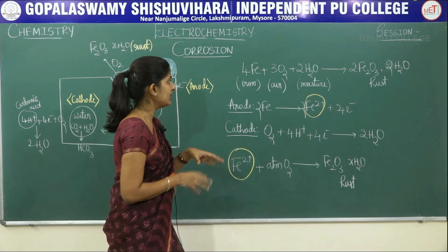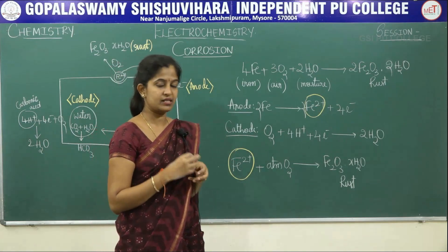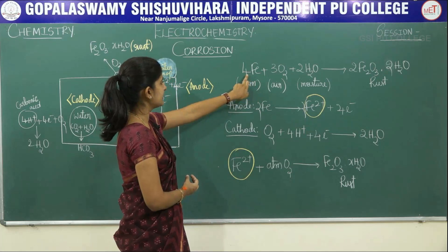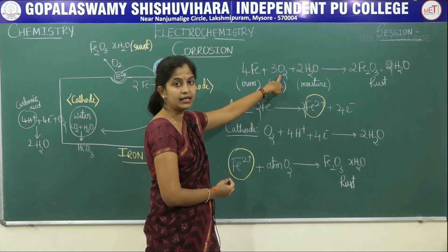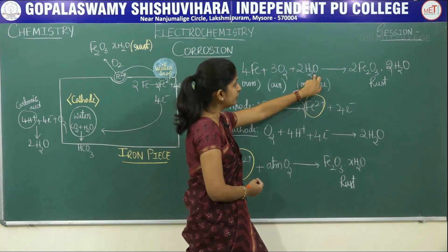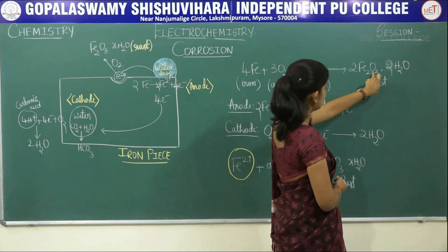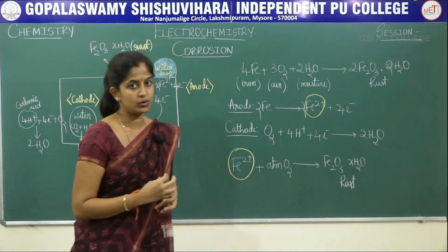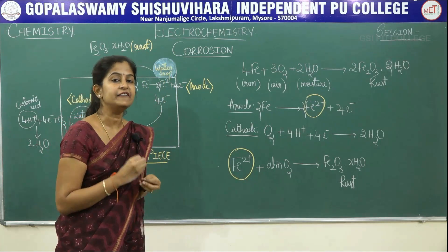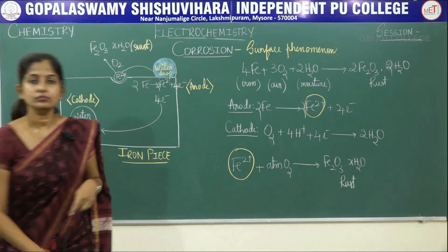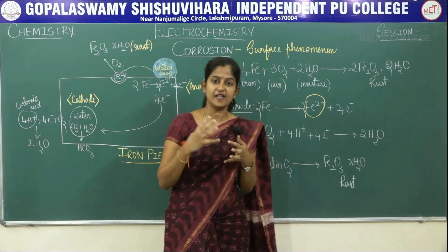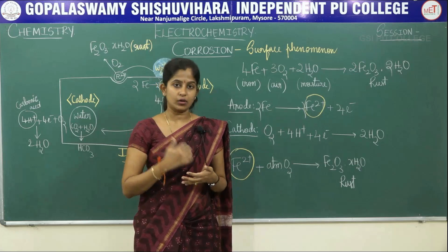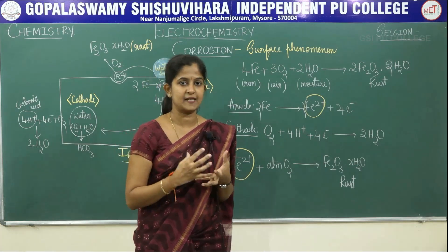Corrosion is a reaction with atmospheric oxygen and moisture content to form the respective metal oxide. In the general reaction, iron reacts with atmospheric oxygen and moisture to form iron oxide, which is your rust. Conversion of metal into its respective metal oxide is called corrosion or rusting. Remember, this is a surface phenomenon — the surface exposed first reacts with atmospheric oxygen and moisture, and then the inner layers of the metal get corroded.